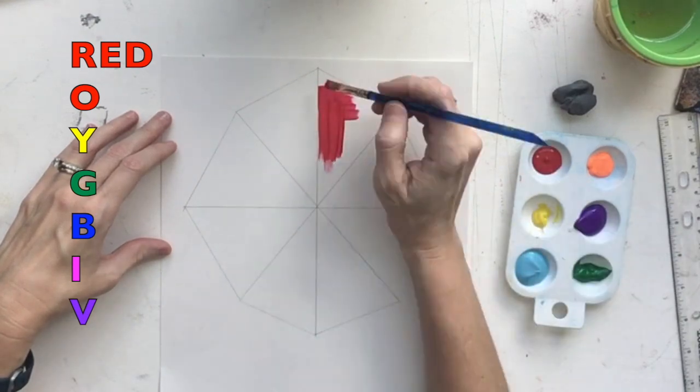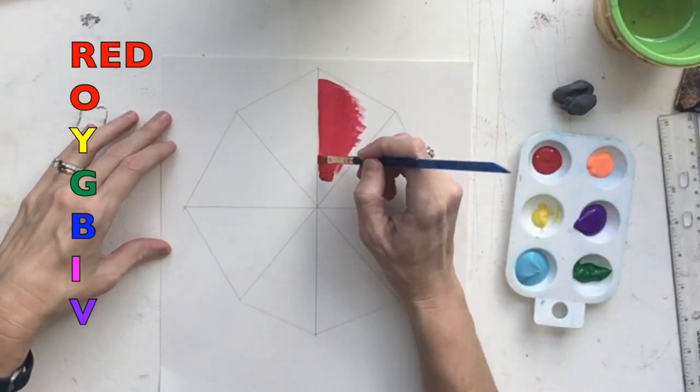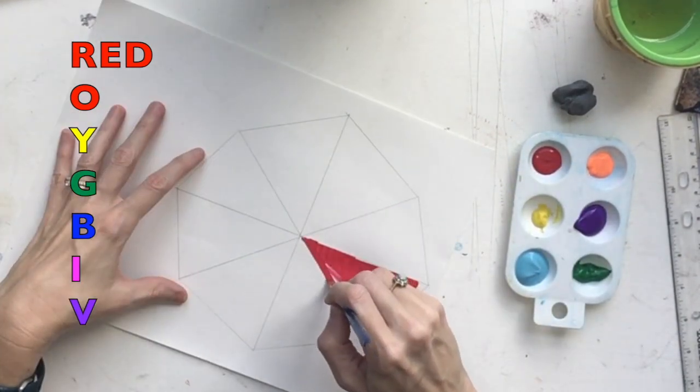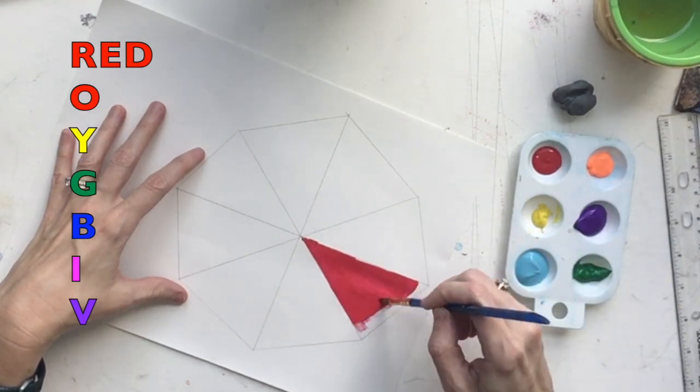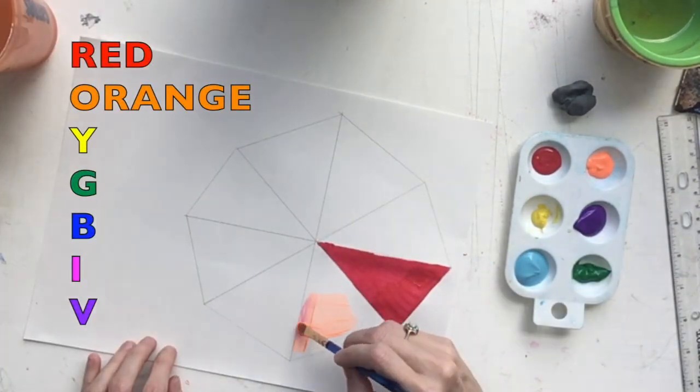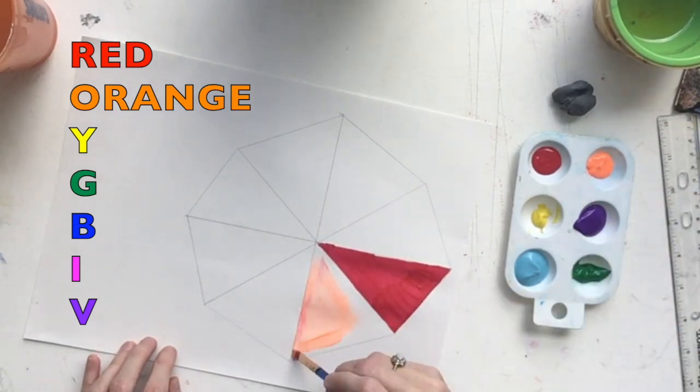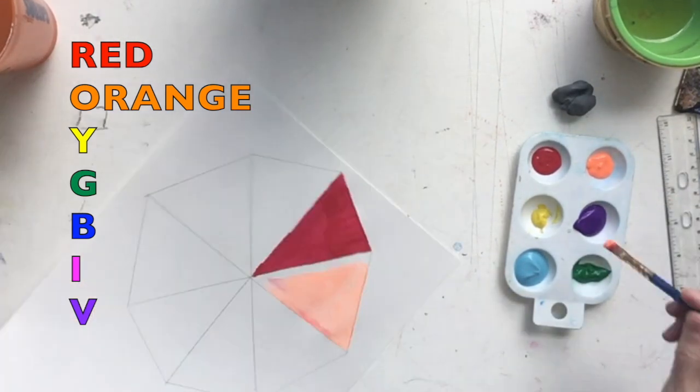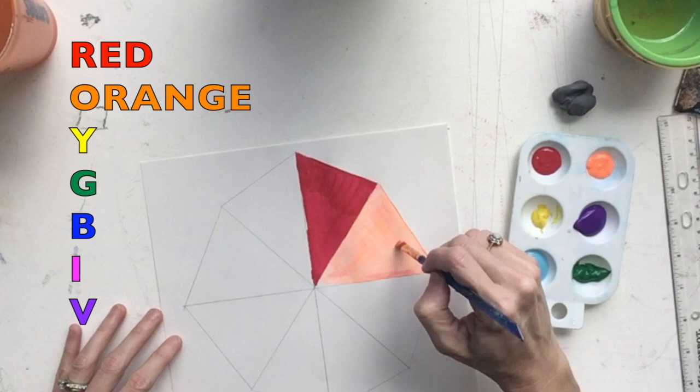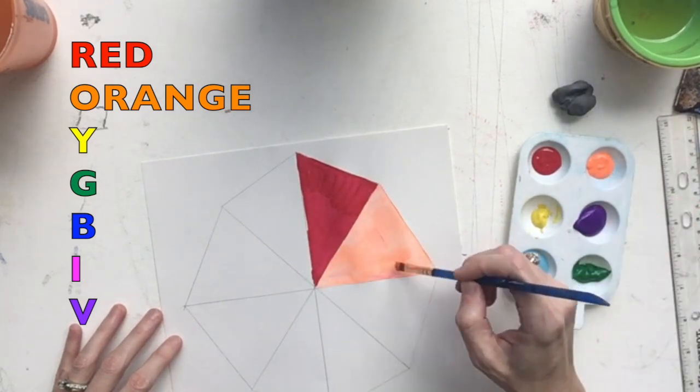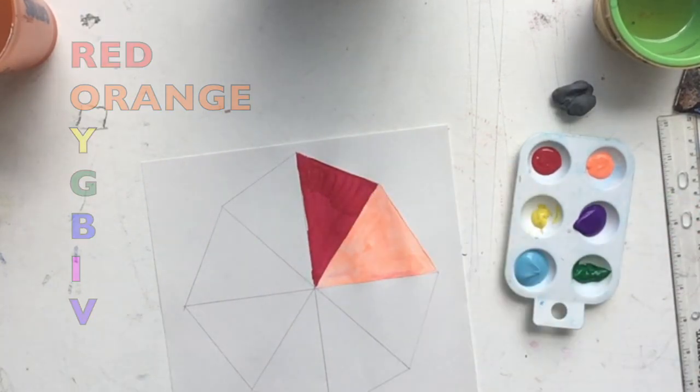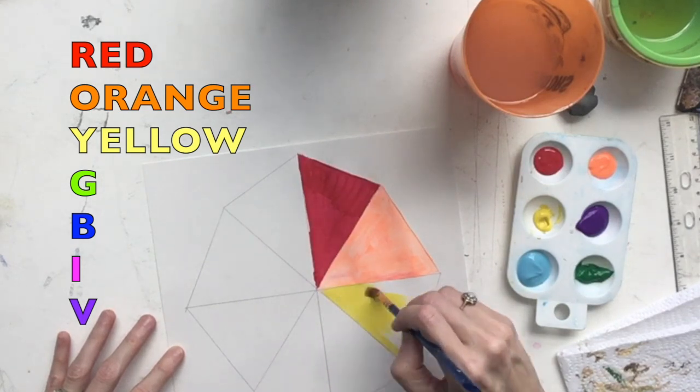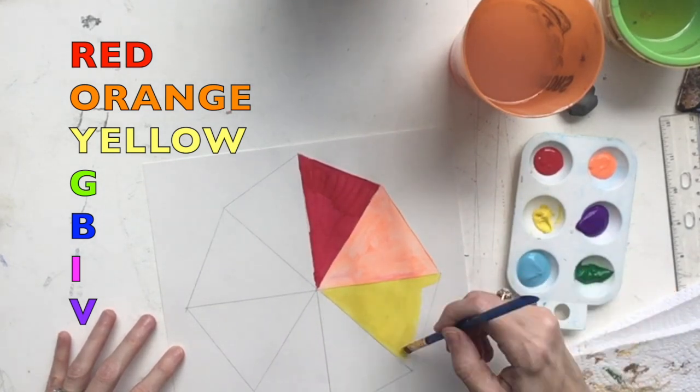Now, we're going to build our umbrella using the Roy G. Biv colors. So, my first color is red. My next color is orange. Now, yellow. These are all warm colors.